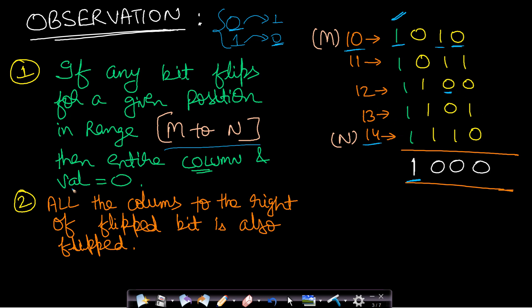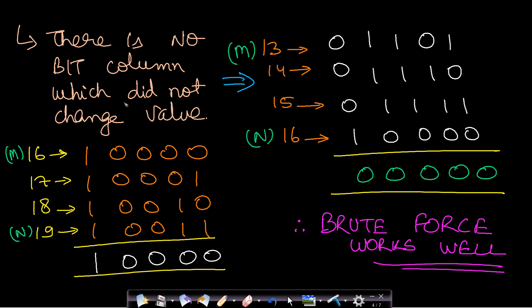The second observation is: all the columns to the right of a flipped bit are also guaranteed to have been flipped. I will prove this with an example.